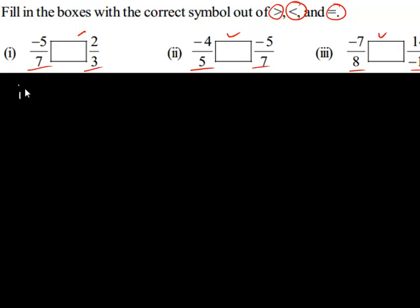The first question is negative 5 upon 7 and 2 upon 3. Before we compare the rational numbers, we should express each rational number with a positive denominator.